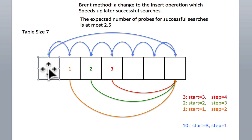But if we put 10 here, then next time when we're searching for 10, we'll have to go through the same long sequence. So Brent's method is a way to change the insertion method and move things out of the way, so that the search later would be shorter.